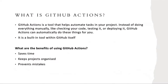So what is GitHub Actions? GitHub Actions is an automated tool that helps with automating everyday tasks like testing, building, deploying, and more. It's a tool built into GitHub itself. The benefits include saving time, eliminating manual labor, keeping the project organized, and preventing mistakes. For example, if you're pushing a file to the repository and there are errors in your code, it will first check to see if the code is stable. If not, it will highlight all those mistakes in that file before merging with the code base.